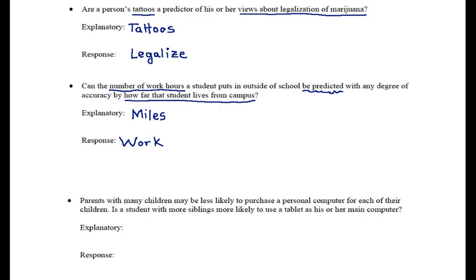In our last example, we're talking about parents being willing to purchase a computer for their kids. If parents have many children, they're perhaps less likely to want to purchase a computer for each child — so there might be a house computer, but children get used to using tablets which are cheaper. The question is: is a student with more siblings more likely to use a tablet as his or her main computer? Does the number of siblings predict tablet use? So our explanatory variable is siblings, and our response variable is tablet.